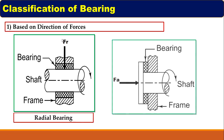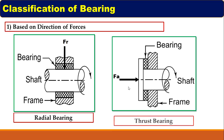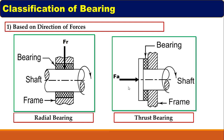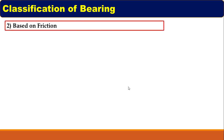Now consider the second figure. In this figure, the bearing is subjected to only axial or thrust force. There is no radial force. The bearing is subjected to only axial force or thrust force, and thus this bearing is called a thrust bearing.